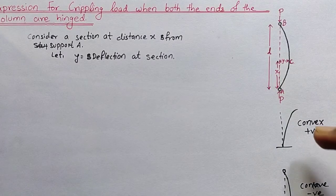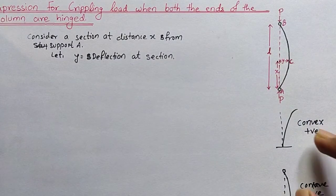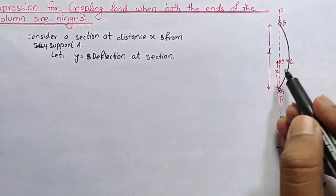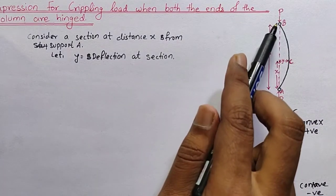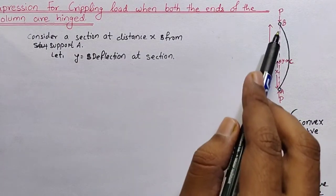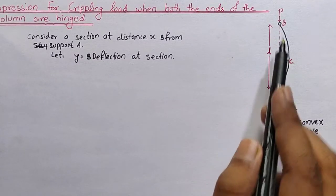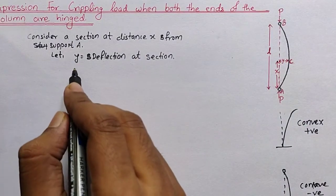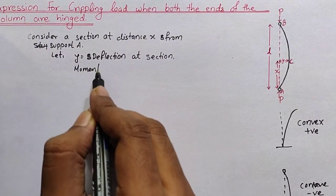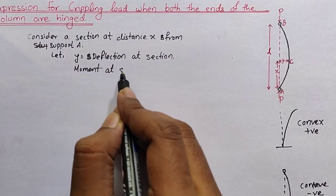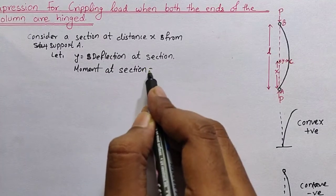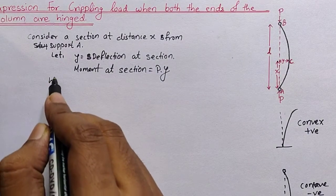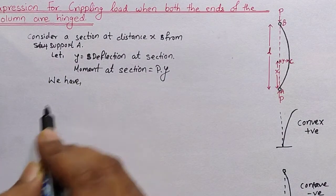Now we know the sign convention for the moment due to deflection. Due to the crippling load P, the deflection is y, so the moment equals force multiplied by perpendicular distance. Since P is at right angles to deflection y, the moment at that section equals P multiplied by y.